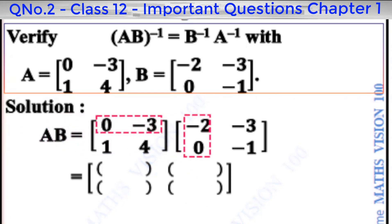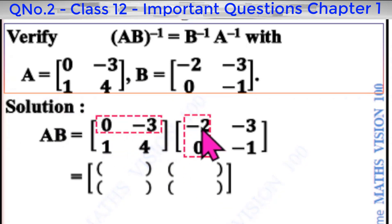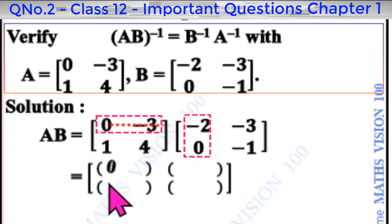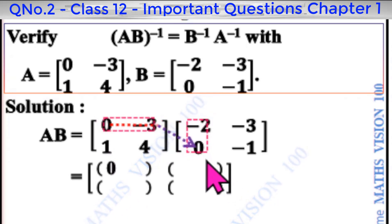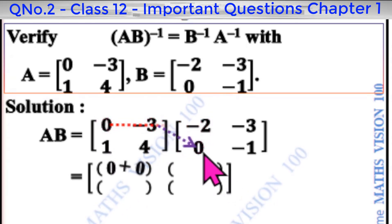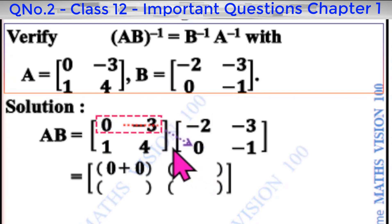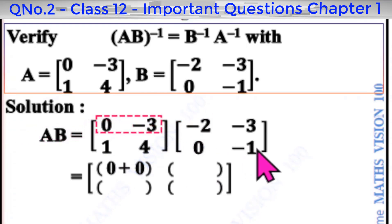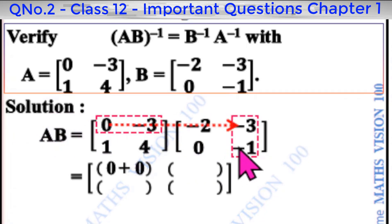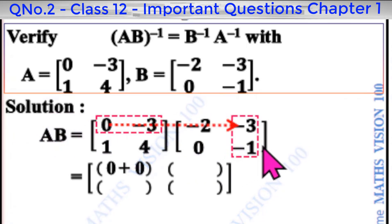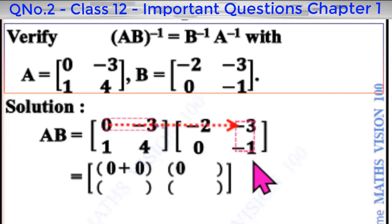First row, first column: 0 into minus 2 is 0, minus 3 into 0 is 0. First row, second column: 0 into minus 3 is 0, minus 3 into minus 1 gives plus 3.